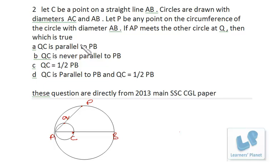So I join QC and I join PB. Now a very simple concept is involved here, that is angle in semicircle is always 90 degrees. Since AB is diameter, angle APB will be 90 degrees, right.